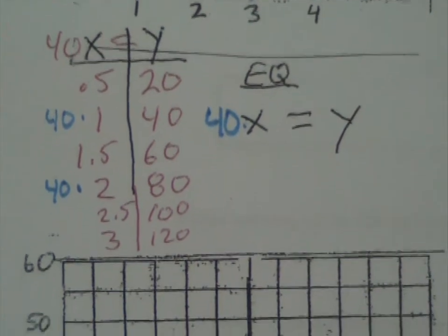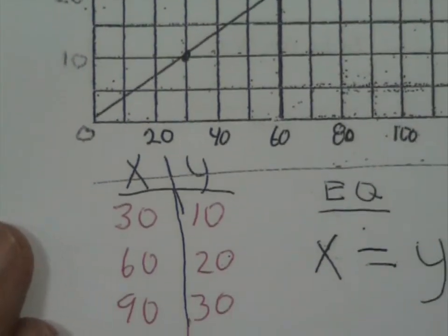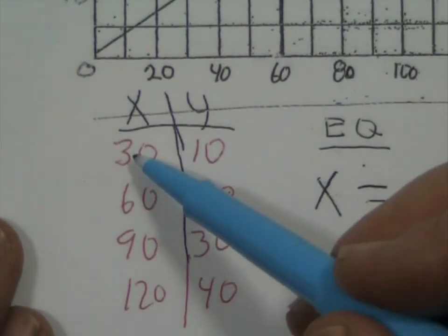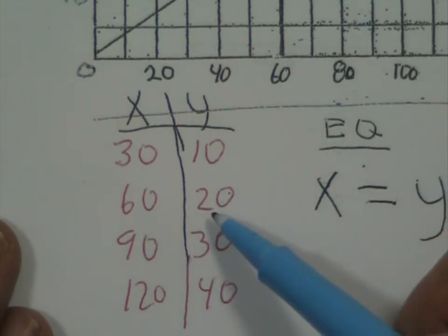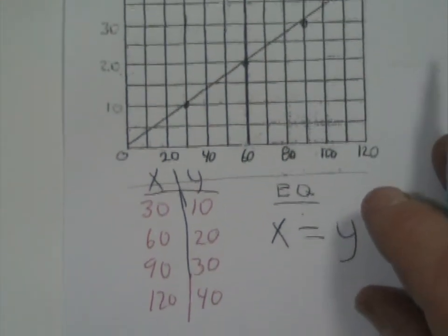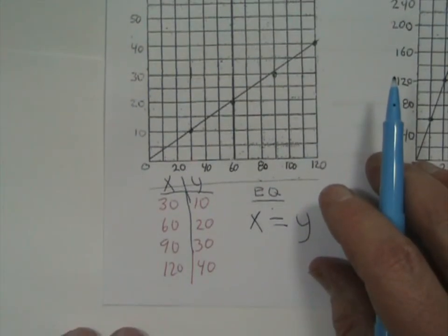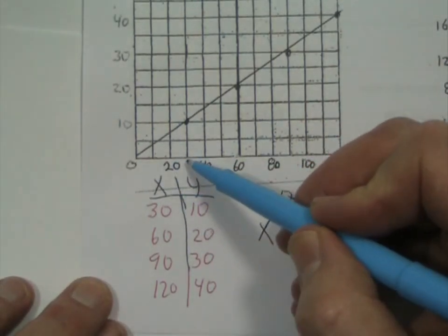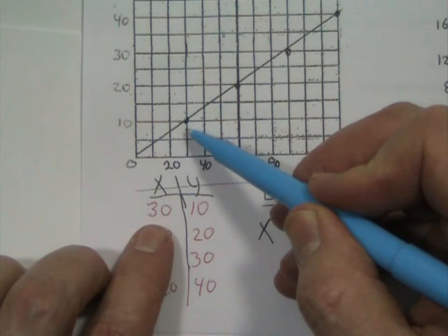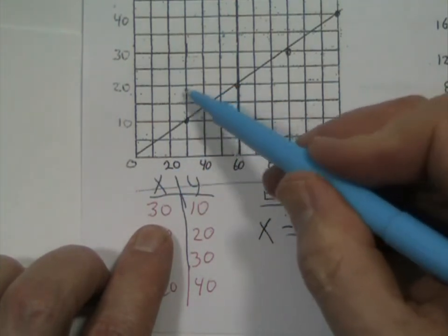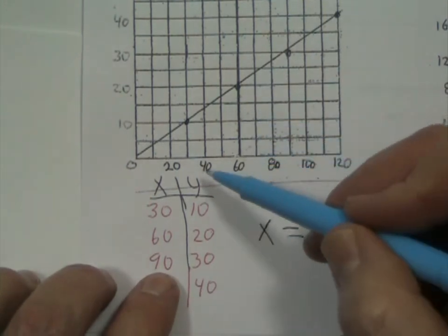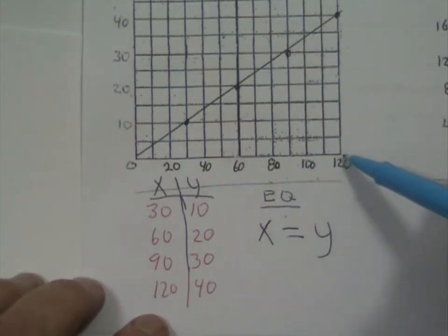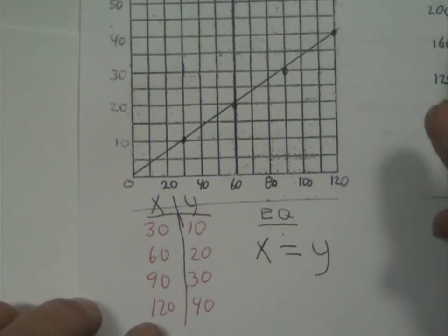Alright, going down the page. I did the other one. I already put in the points there. It was 30, 10, 60, 20, and just in case you missed that, notice that each one of these is 10. So if I go over 30, up 10, there's 30, 10. I go over 60, up to 20, that's 60, 20. I go over to 90, up to 30, 90, 30, and the other one's 120 to 40.